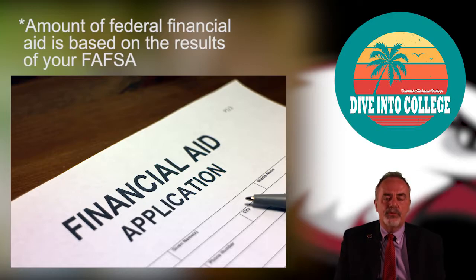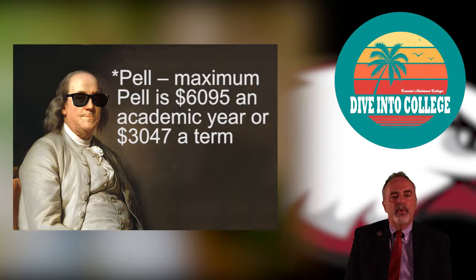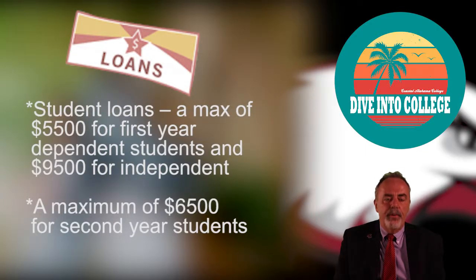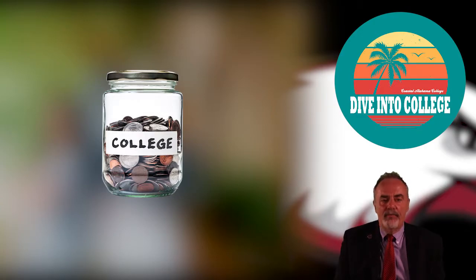To find out what your EFC is, look at your student aid report when you get it, and it will tell you what you are eligible for for Pell, which is a federal grant. Pell grants are based on your expected family contribution and can be anywhere from $500 to $6,000 a year. Everybody who files the FAFSA is eligible for student loans — freshman up to $5,500, up to $9,500 if independent. Sophomores start at $6,500 and can go up to $10,500 if independent.